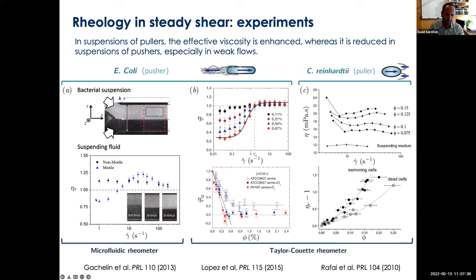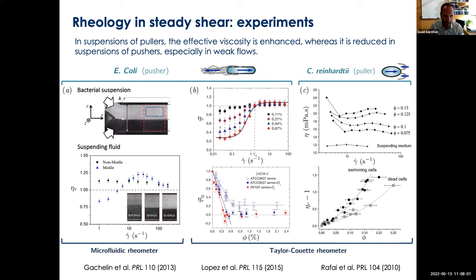This viscosity below one is very surprising. It means you take water, add bacteria to it, shear the system, and measure a viscosity less than that of water. That's very unusual — typically when you add particles to fluids, the fluids thicken and become more viscous. Active fluids are one example where this doesn't necessarily happen. We'll understand why in the next few slides.